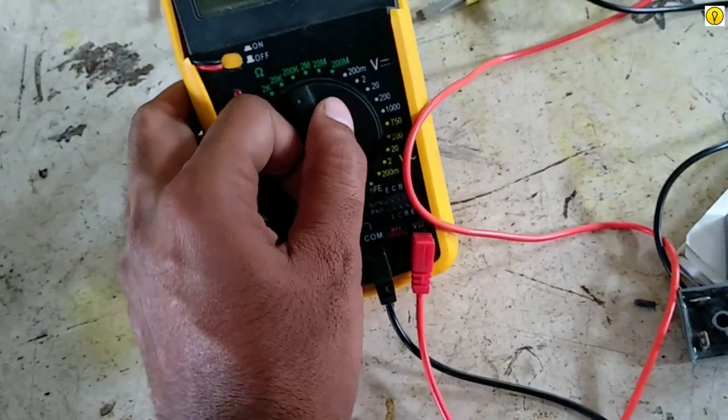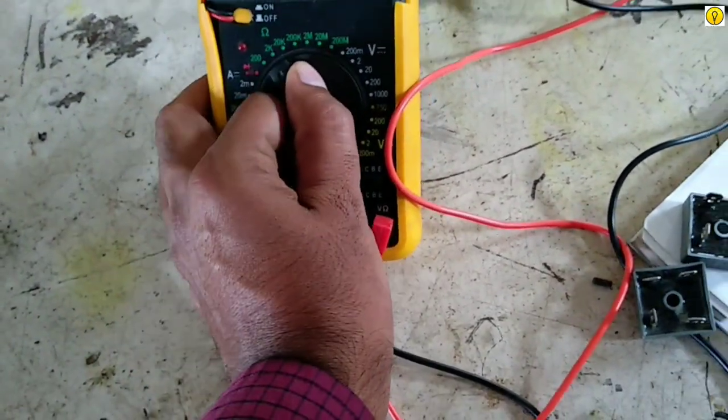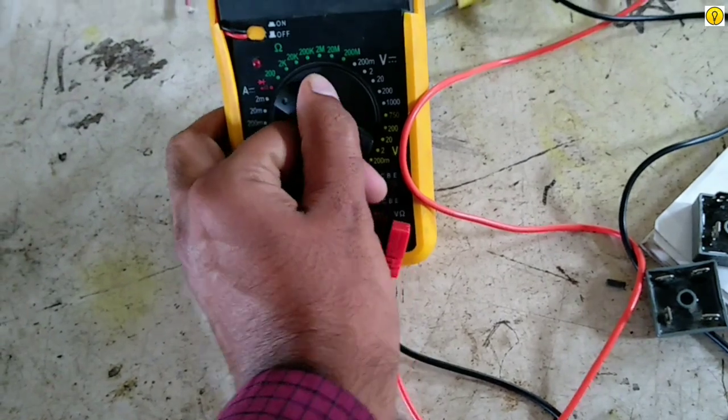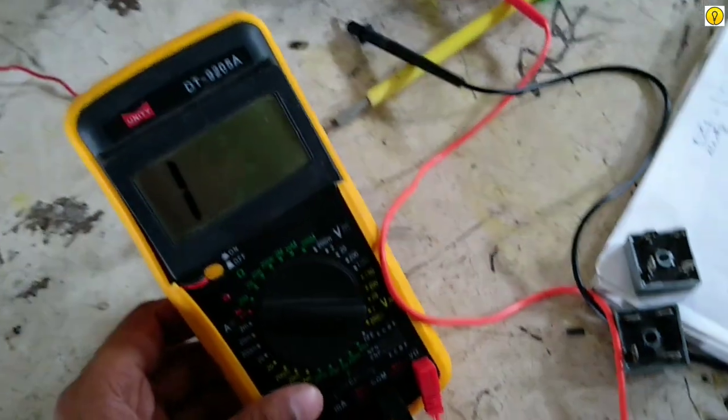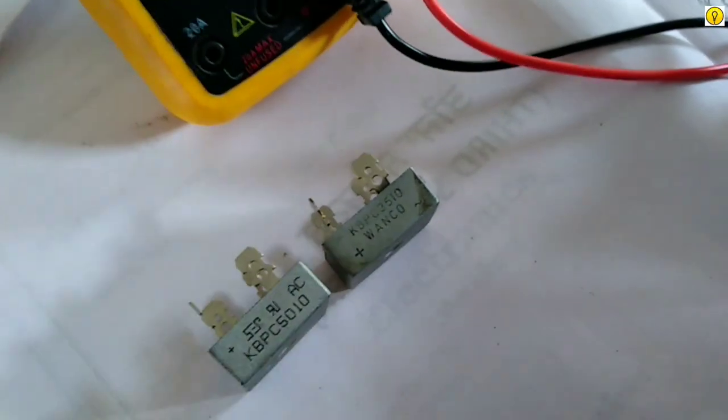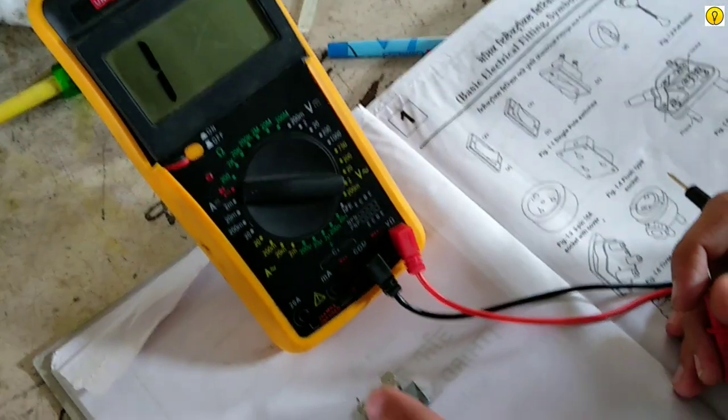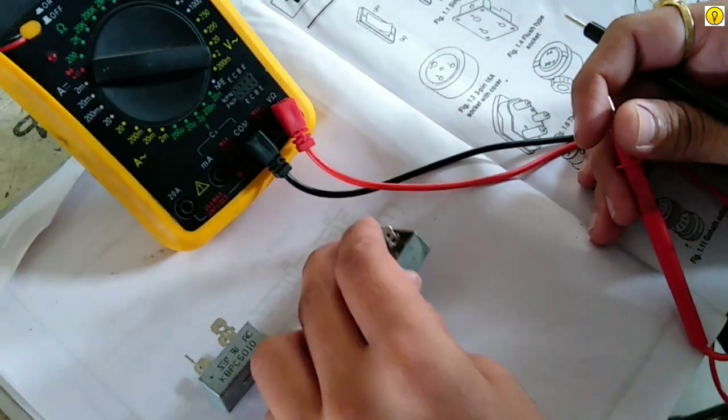So now we are going to check the rectifiers with the help of a multimeter. Set the multimeter in continuity. So take one rectifier.